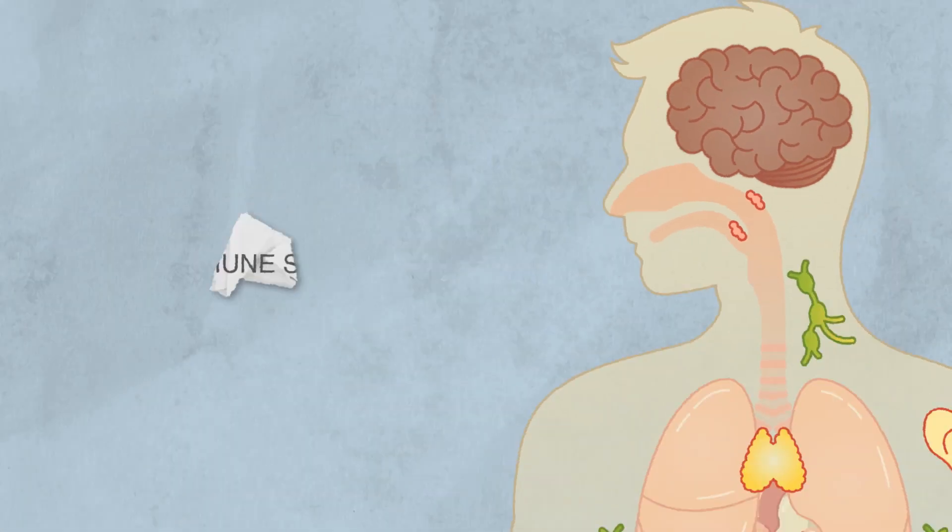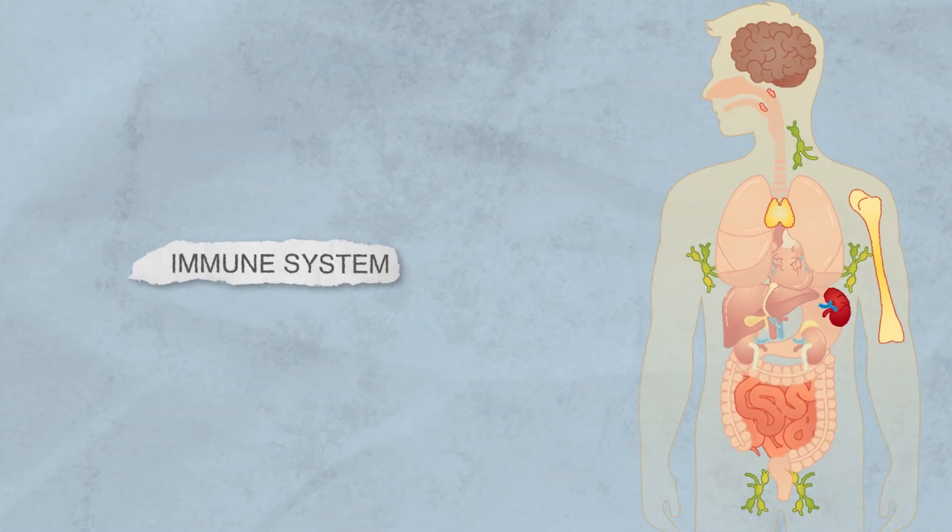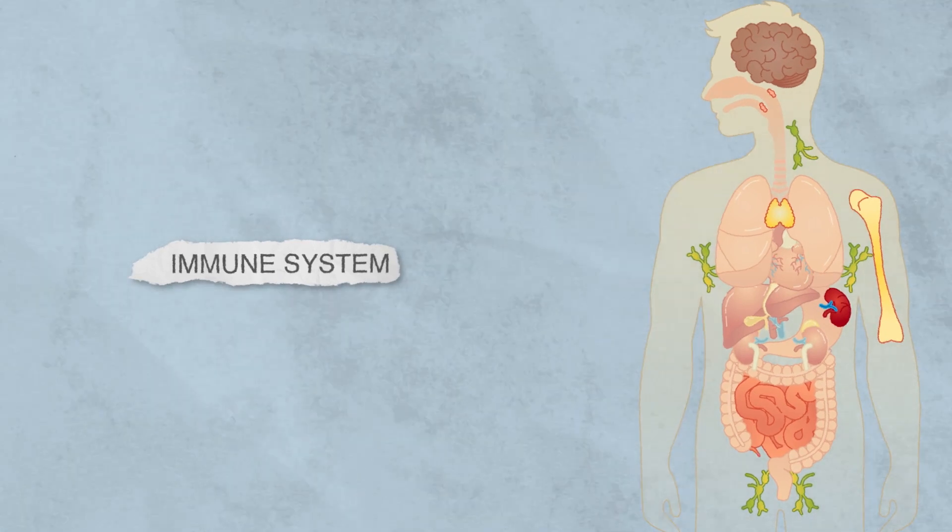After the human brain, the human immune system is the most complex biological system that we know of.